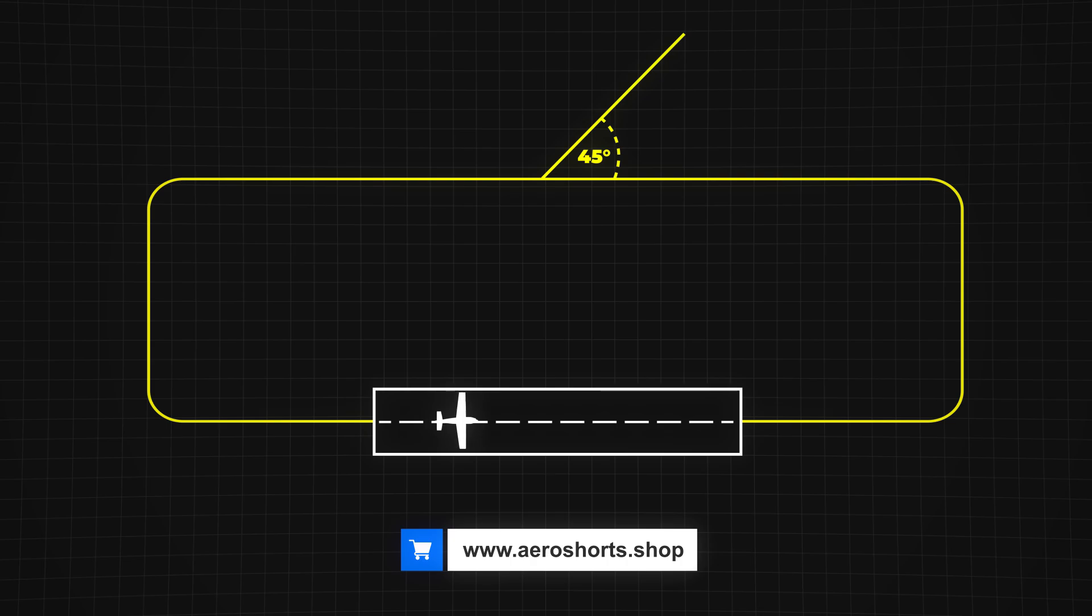For aircraft taking off, the departure leg is the first part of the pattern. After takeoff, the pilot can either exit the pattern or remain in it by turning onto the crosswind leg. From there, the aircraft rejoins the downwind leg if another landing is planned.